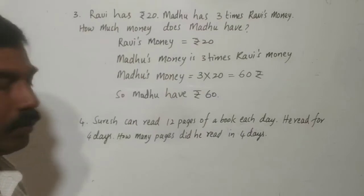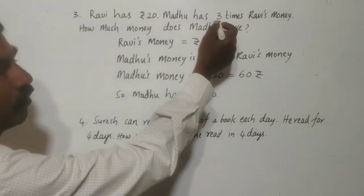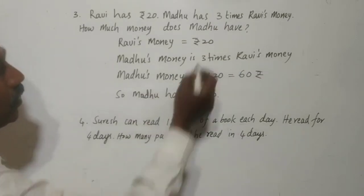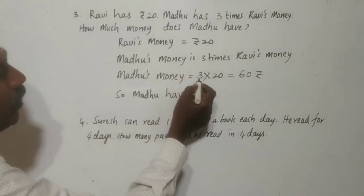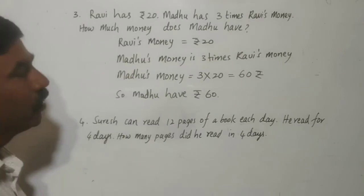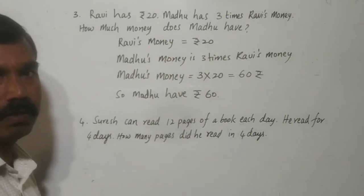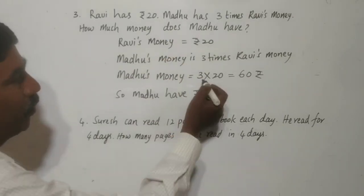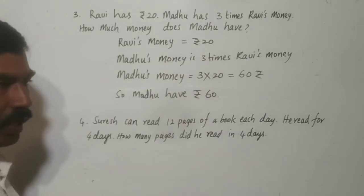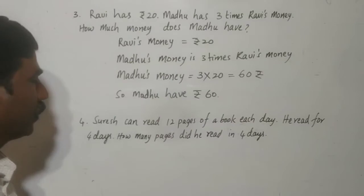Next, you see — twice means you have to multiply with 2; 3 times, you have to multiply with 3; 4 times means you have to multiply with 4; 5 times means you have to multiply with 5. Okay? How many times — you have to multiply with that number. Okay.